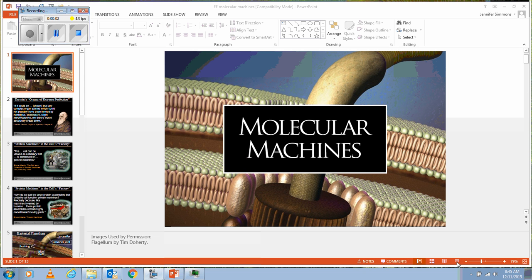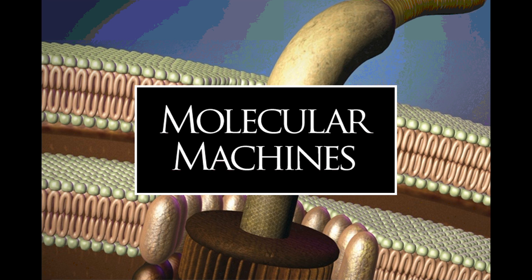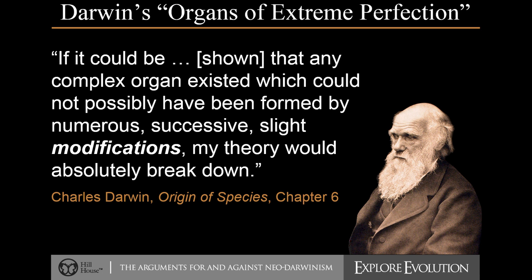We're going to look at structures known as molecular machines — this corresponds to pages 116 to 122 of your evolution book. So far we've seen Darwin's theory of natural selection, essentially survival of the fittest, which says that individuals with a variation that gives them some functional advantage are more likely to survive, reproduce, and pass on the genes for that variation to future generations.